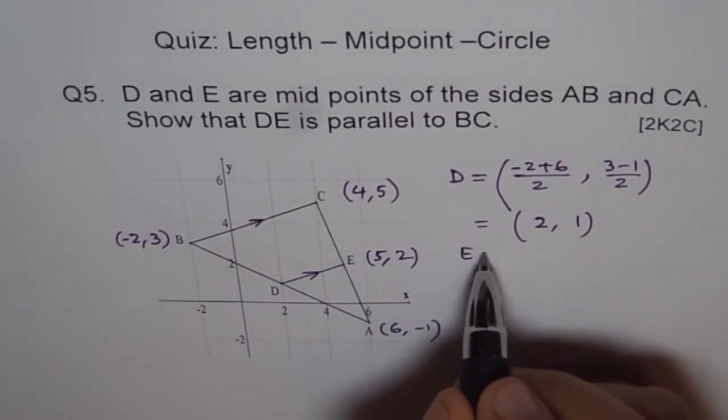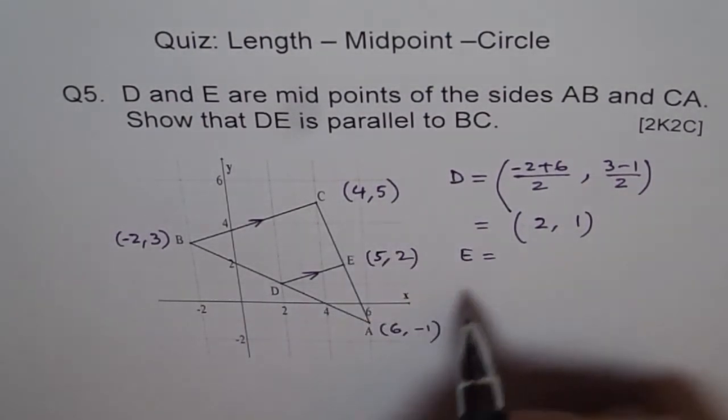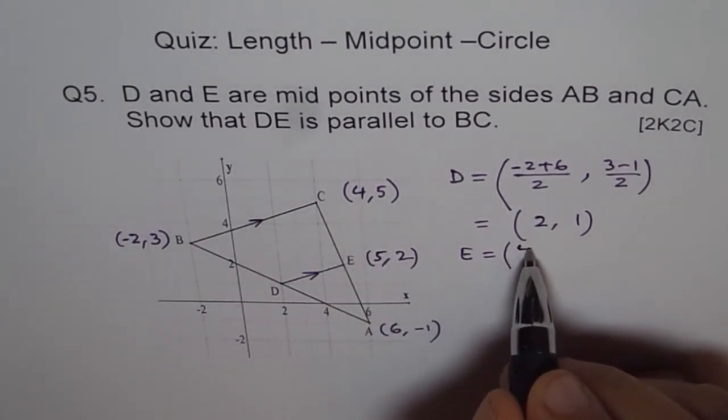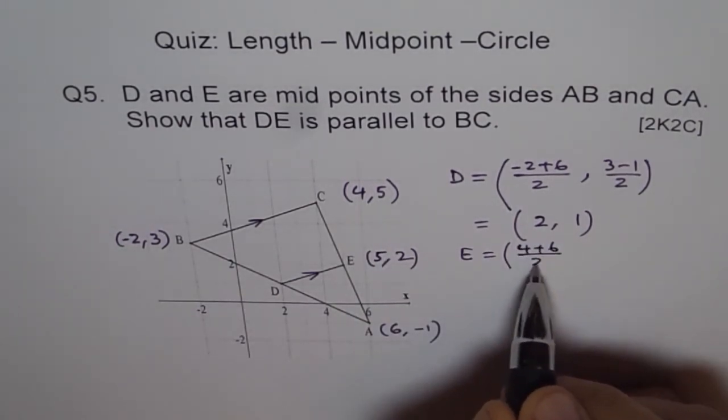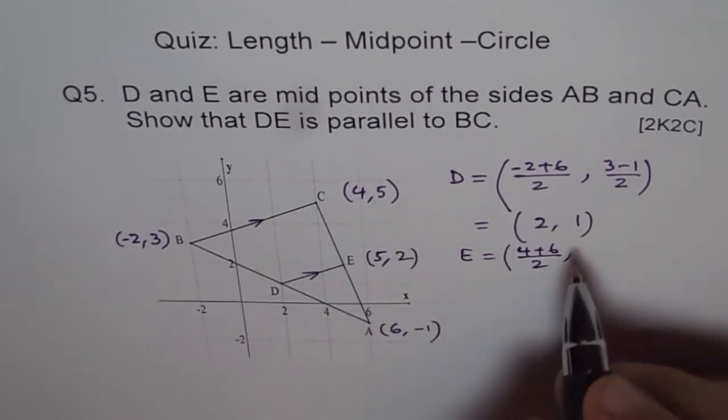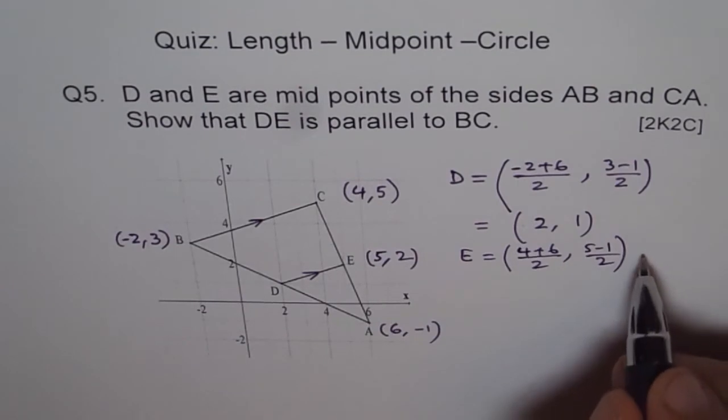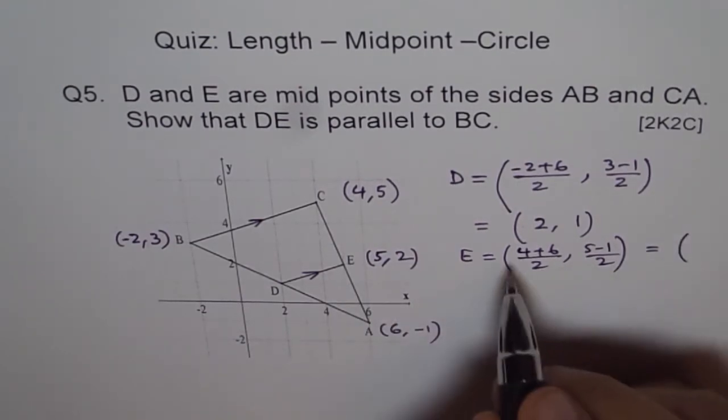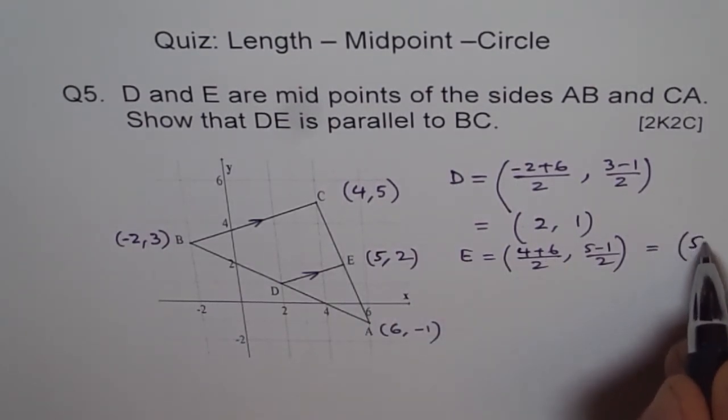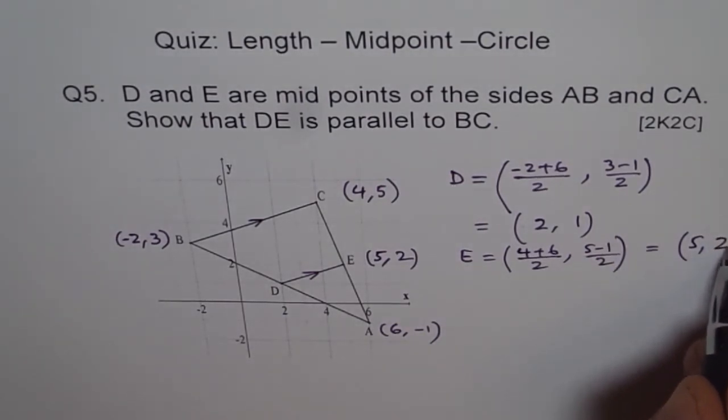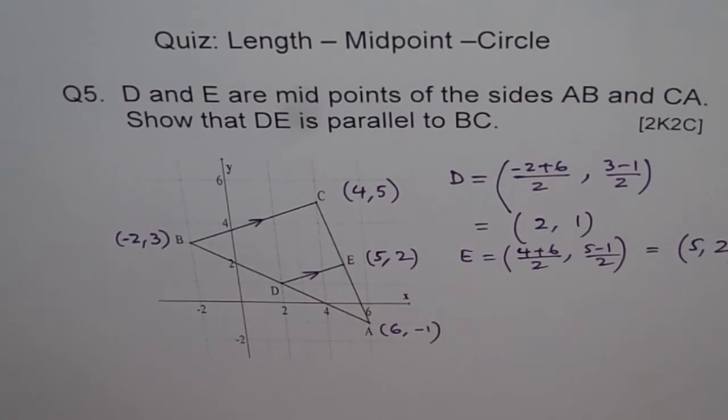So we say E equals (6 + 4), 10 divided by 2, right? So we write (4 + 6) divided by 2 and (5 + (-1)), so 5 minus 1, divided by 2. And we get this point as 5. 4 + 6 is 10 divided by 2 is 5. 5 minus 1 is 4 divided by 2 is 2. So we know points D and E.